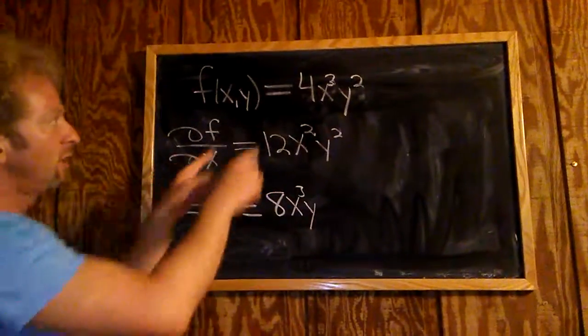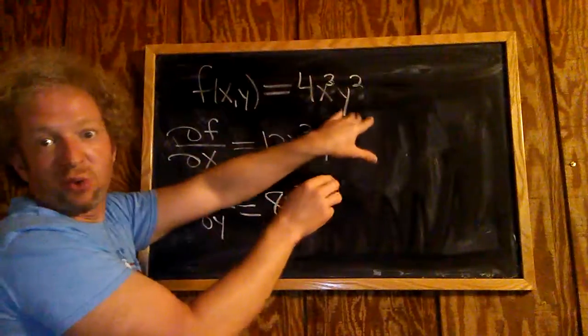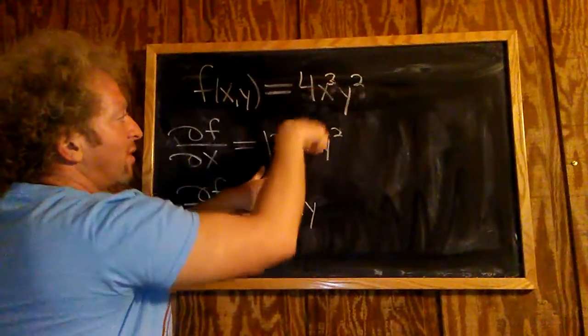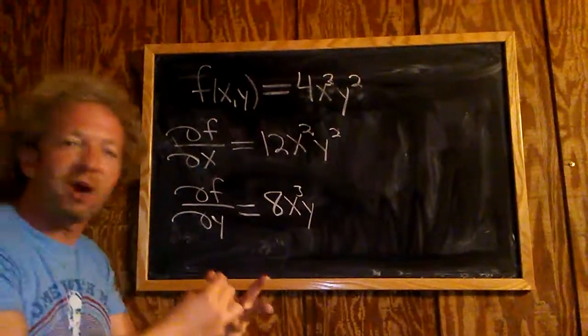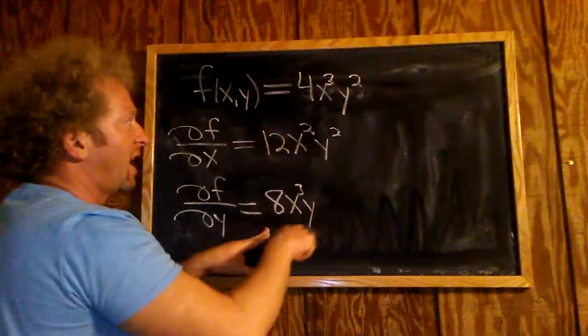So recap, to find this one, you differentiate the x, treat the y squared as constants. So 3 times 4 is 12, 3 minus 1 is 2, that hangs out. To find this one, you differentiate with respect to y. So 2 times 4 is 8, 8x cubed, y.